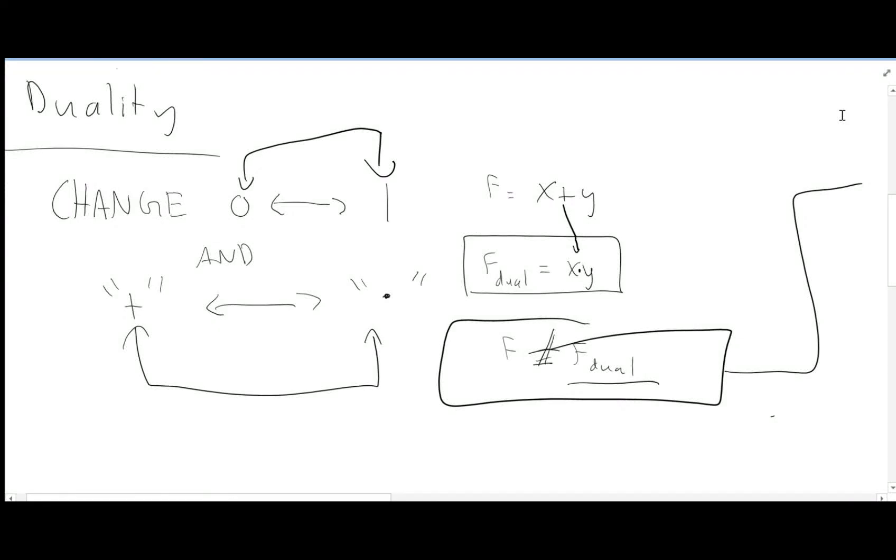Alright, this is part 2 of 3 and we're going to go over duality and simplification today. So what is duality? Well, it's very simply you change all your zeros to ones, as you get by this arrow, and all your pluses to dots, or all your ORs to ANDs, and vice versa.